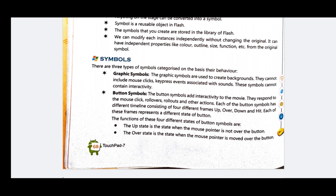Button symbols respond to mouse clicks, rollovers, rollouts, and other actions — for example, going to the next or previous page. Each button symbol has a different timeline consisting of four different frames: Up, Over, Down, and Hit. Each of these frames represents a different state of the button.